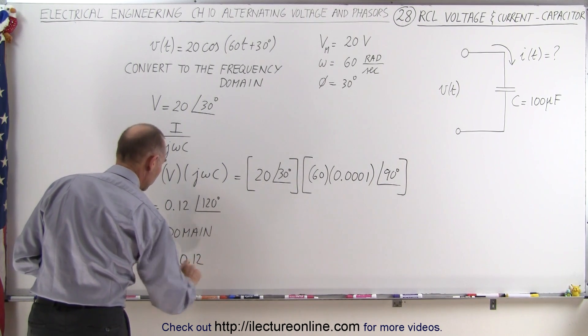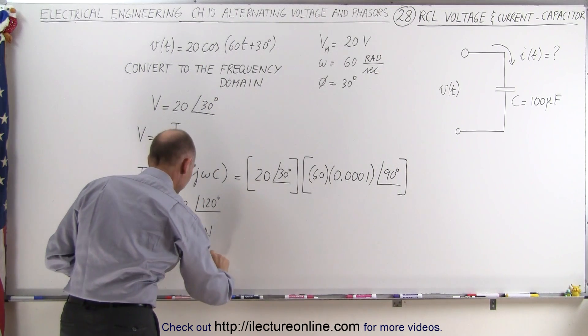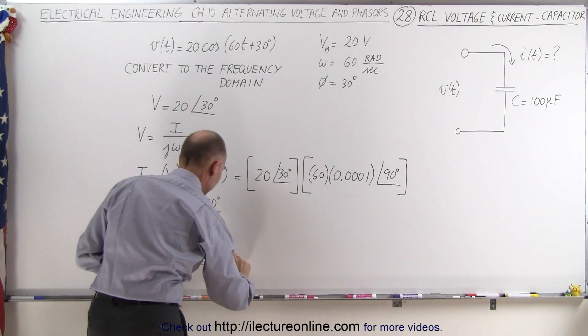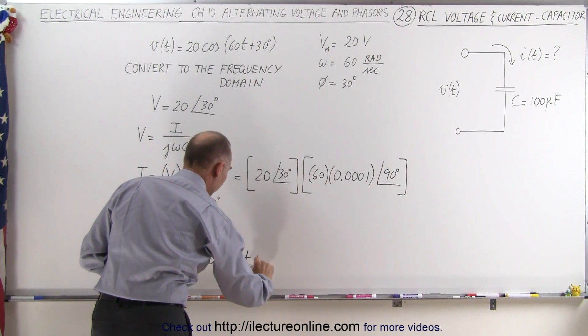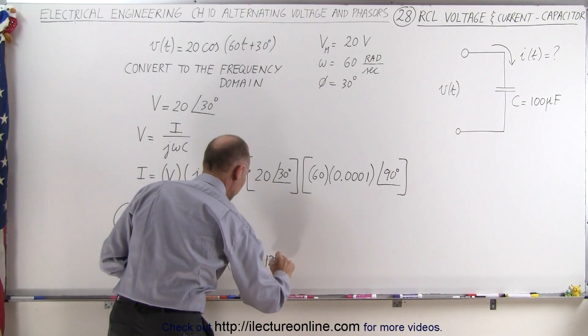So when we do that we get the current i as a function of time is equal to the amplitude 0.12 amps, and then we write that as a time varying function of the cosine of ωt, ω is still 60t, plus the phase angle which in this case is 120 degrees.